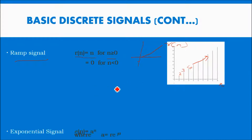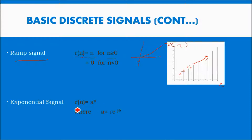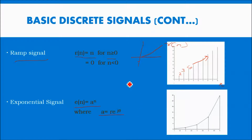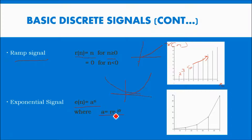The next basic signal is the exponential signal. Its value is e of n equal to a raised to n, where a is r times e raised to j theta. If you put the values, you will get the exponential signal. Generally it is increasing, or sometimes it is decreasing also, depending on the values of r and the sign of the exponent.